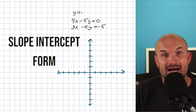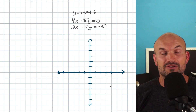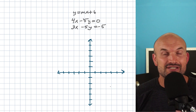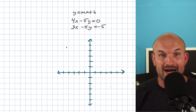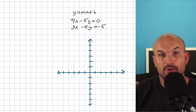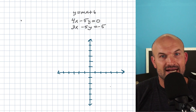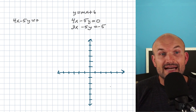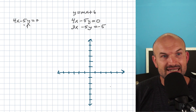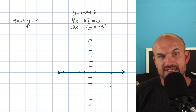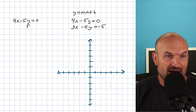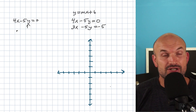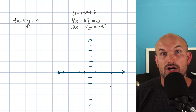Remember, slope-intercept form is y equals mx plus b. The reason why these problems can trip up students is because we have to go ahead and solve each of these equations for y. The first thing I'm going to do is put both these equations on the left-hand side and solve for y using inverse operations. What we need to identify is what is being applied to y — we are adding 4x and multiplying by negative 5.